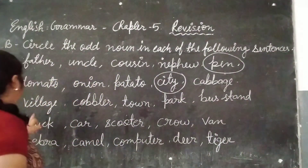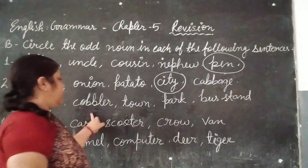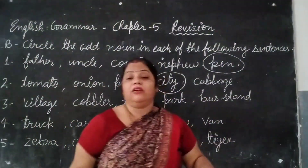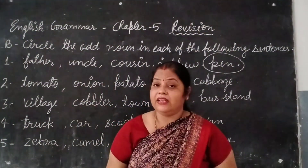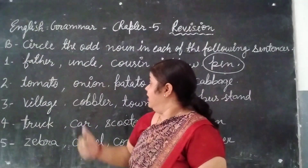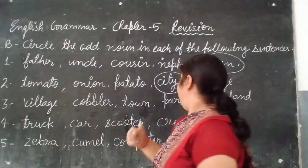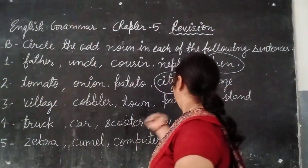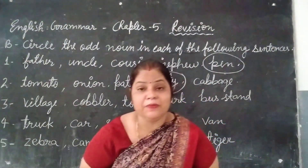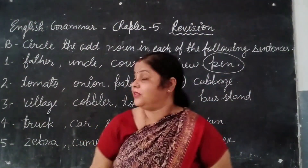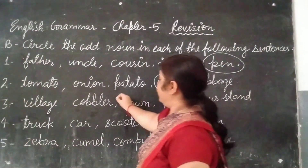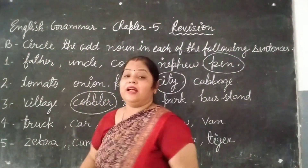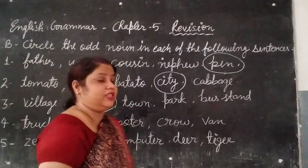Third question: village, cobbler, town, park, bus stand. Village, town, park, and bus stand are all places. Cobbler — 'mochi' — is the one who repairs shoes. So cobbler is the most different here. Circle cobbler.